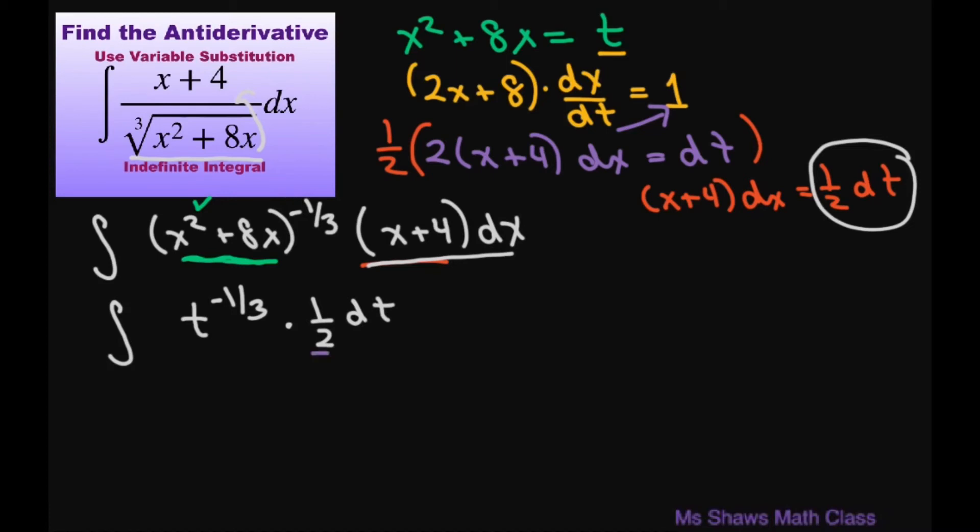Using your constant property, we can move out this one-half times the integral of t to the power of negative one-third dt.